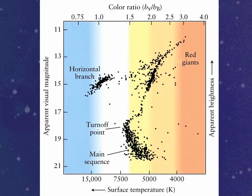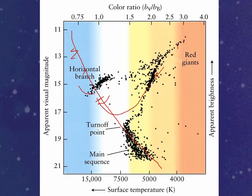We can look at a star cluster. This is the HR diagram of a very old star cluster. The main sequence would look something like that. What's happened is that the stars that were way up here — the higher mass stars — those stars have already died, become red giants, and got back onto the horizontal branch.